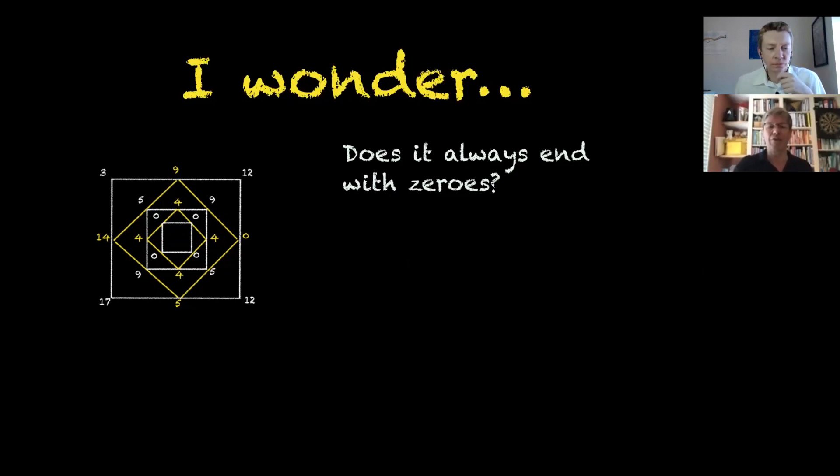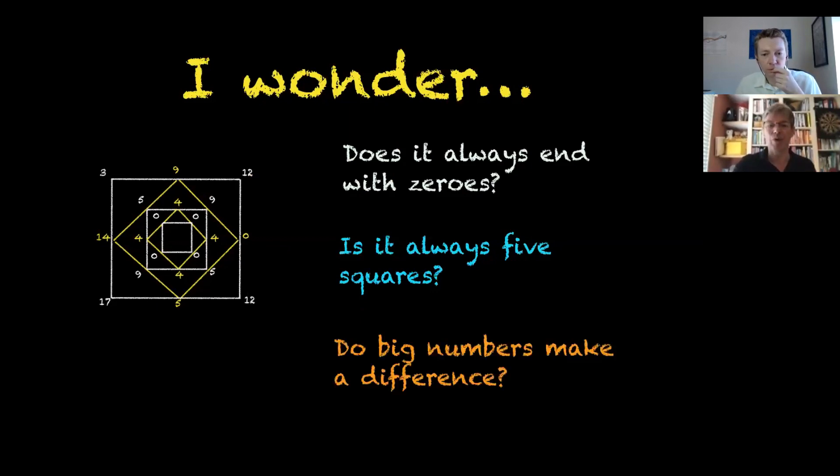If it isn't always five squares, how can I make it not be five squares? I've thought of one way straight away. I'll put 5, 5, 5, 5 at the corners and then it's zero straight away, so it's only two. But can I get more? Do big numbers make a difference?